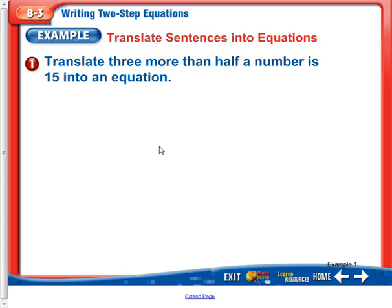For example, one: we'll translate 'three more than half a number is 15' into an equation. Let's underline some key parts. It says 'three more,' so if we want to write that, three more means addition. Then 'than' tells us to flip the order.